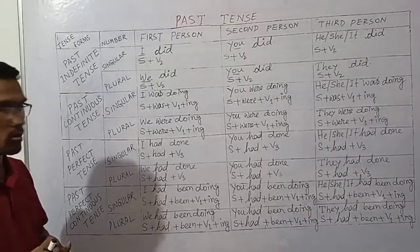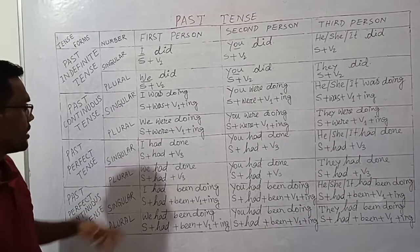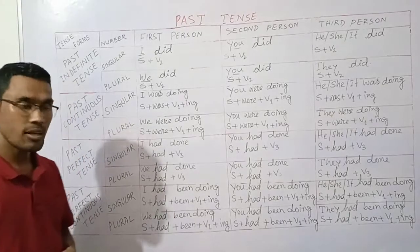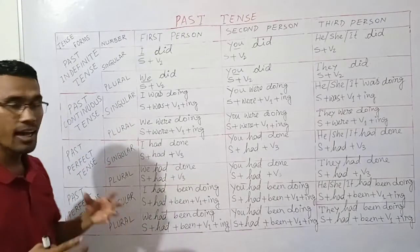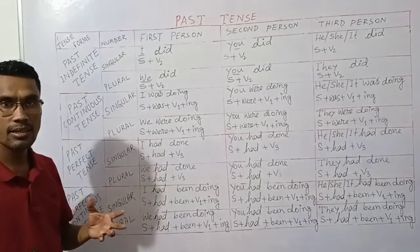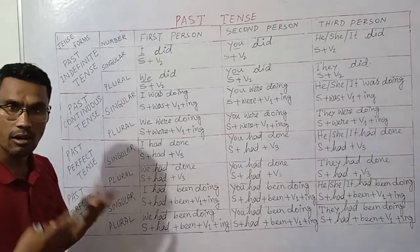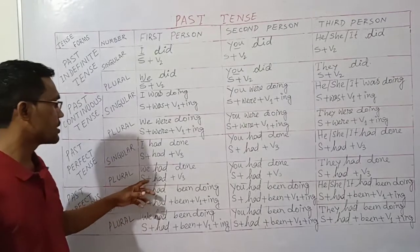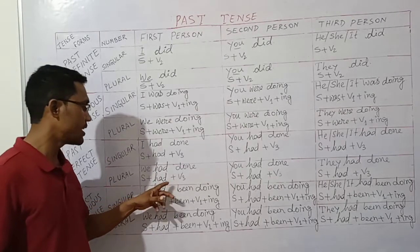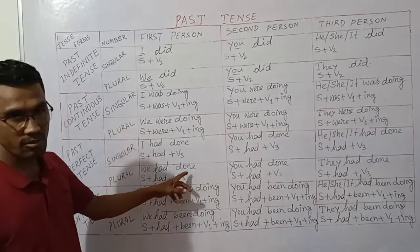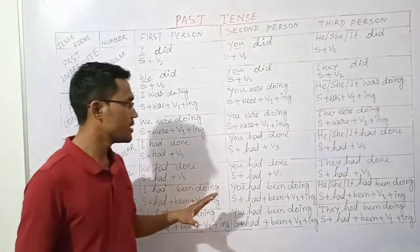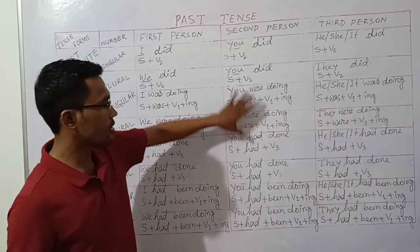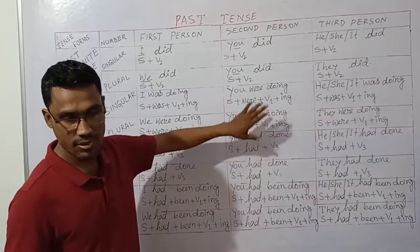The sentence structure for past perfect is: subject plus 'had' plus verb third form plus object. For example: 'I had done my homework.' First person plural: 'We had done our homework.' The structure is: subject plus 'had' plus verb third form plus object.